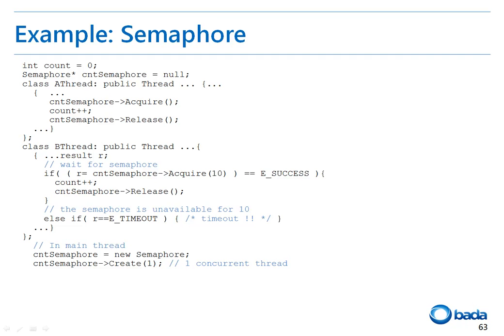In this sample code, only one thread has been specified to access the semaphore. Thread A acquires the semaphore, accesses the variable, and then releases the semaphore. Thread B is implemented differently from the one in the previous sample code. The parameter 10 specified when the acquire function is called indicates that the function should return if the semaphore cannot be acquired within 10 milliseconds.